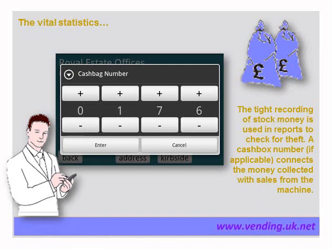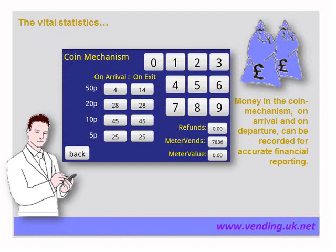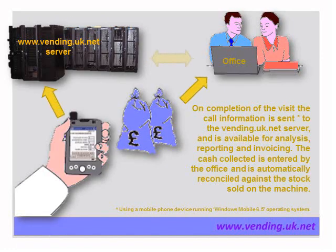This is used in the integrity check which we come to later on. As part of his visit, he will also check the amount of money in the coin mechanism and record the amount of money there and any that he may add — recording on arrival and on exit. Any refunds given are recorded, along with total vends and total value meter readings. Once he's made the visit, the information collected is sent immediately via his phone to the Vending UK server, and the information is available at the office in real time.